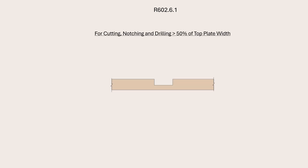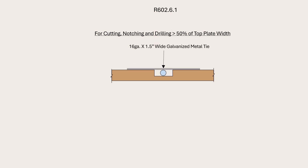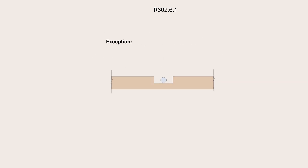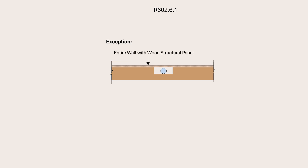According to Section R602.6.1 of the IRC, if the notches or drilled holes exceed 50% of the plate width, a tie is required to compensate for the reduced capacity. The code requires a 16-gauge by 1.5-inch wide galvanized metal tie with 8 10-penny nails on each side of the notch or cut. The nails must have a minimum length of 1.5 inches and the metal tie must extend at least 6 inches on each side. According to the exception in Section R602.6.1, the metal tie plates are not required for cases where the entire wall on the side with the notch is sheathed with wood structural panel sheathing, as the code considers that the wood structural panels will provide the required reinforcement. The contractor must ensure that the wood structural panels are properly nailed to the top plates as required.